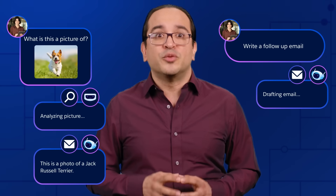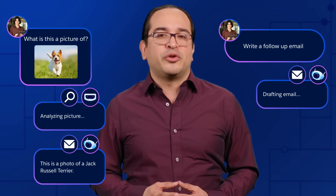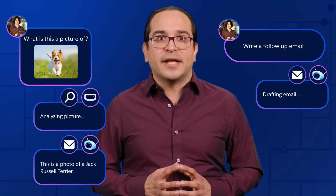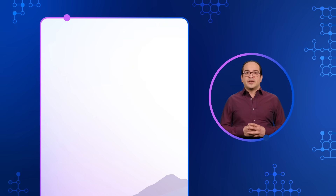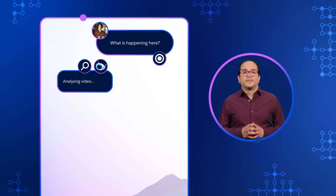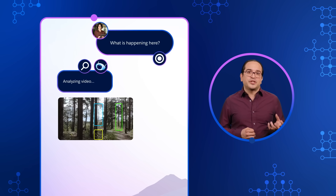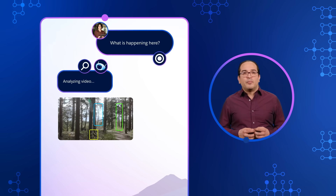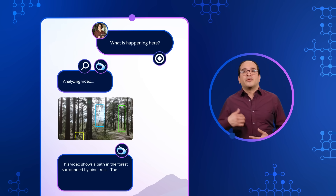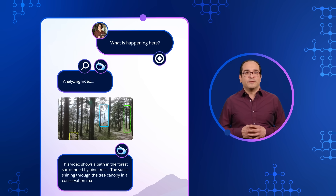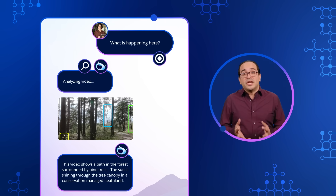Unlike traditional AI models that only process one type of input, like text-only chatbots or image classifiers, multi-modal models fuse multiple sources of data to create a richer, more contextual understanding of the world. For example, if you give a multi-modal AI system a video and ask 'what is happening here?', instead of analyzing just the audio or a single frame, it processes both video and sequences of frames at once — identifying objects, recognizing speech, and understanding the full scene to generate a meaningful response.